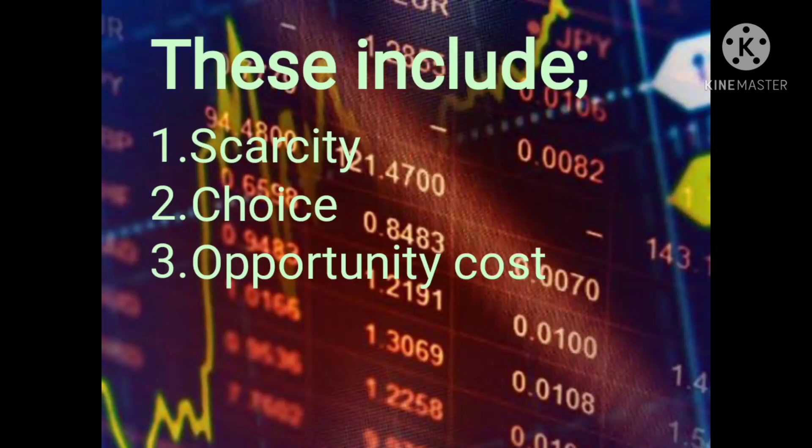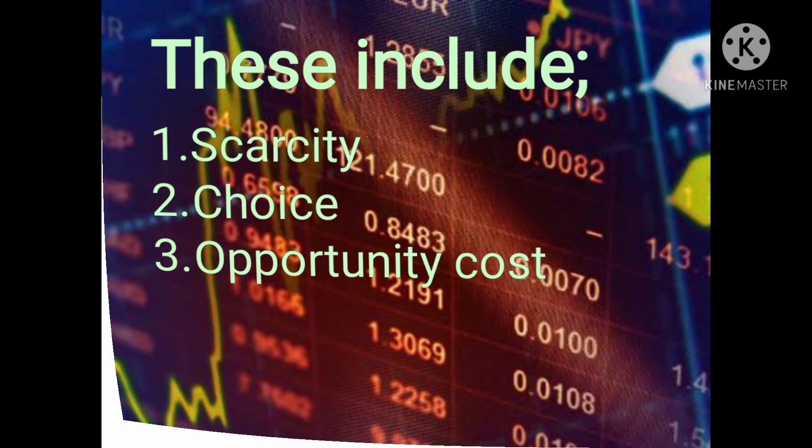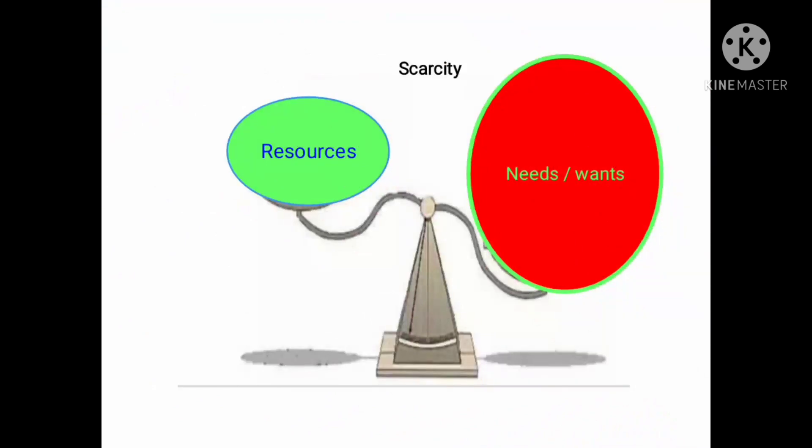These include basically: one, scarcity; two, choice; three, opportunity cost. Let's look at one at a time, and we will start with scarcity.